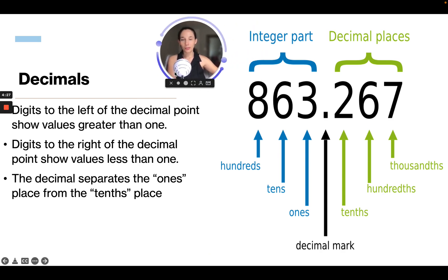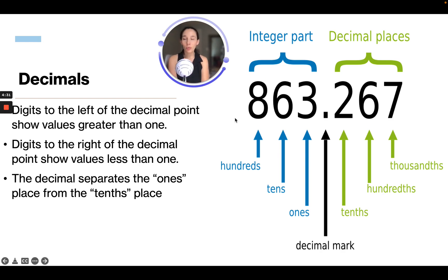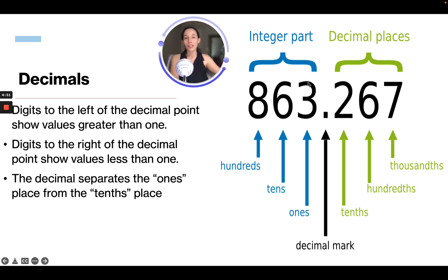So now let's talk about decimals. Digits to the left of the decimal point show values greater than one, and anything to the right of a decimal point is smaller than one. The decimal separates the ones place from the tenths place. After the decimal point, you start at tenths, then hundredths, then thousandths.